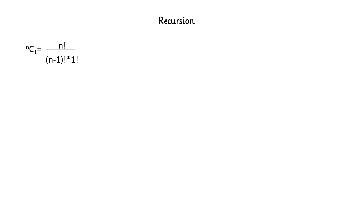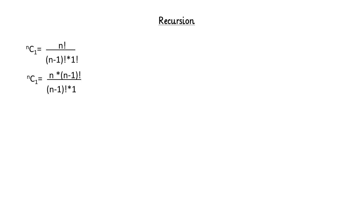I will expand NC1 equals to factorial n upon factorial n-1 into factorial 1. I have used this formula to express NC1. Now to simplify this, I will expand factorial n to n into n-1 factorial, so that I can cancel out the factorial n-1. And finally, if you divide n by 1, the answer will be n. So NC1 is equivalent to n.